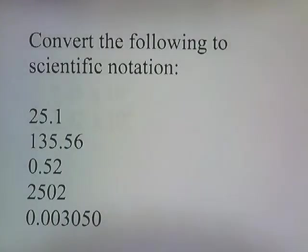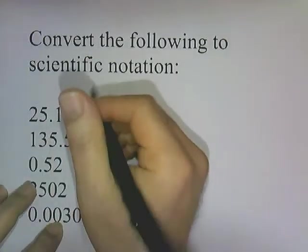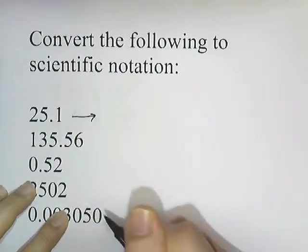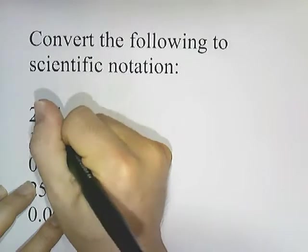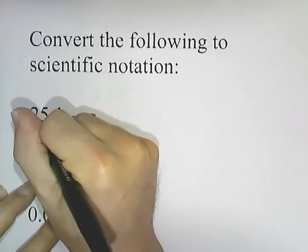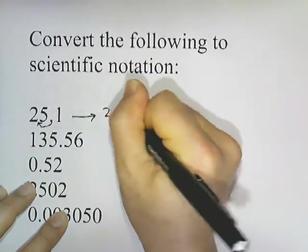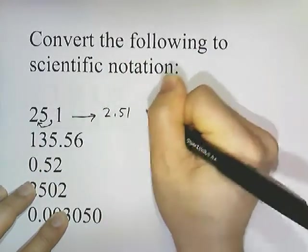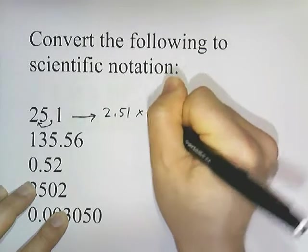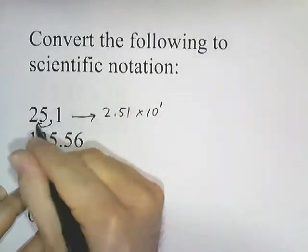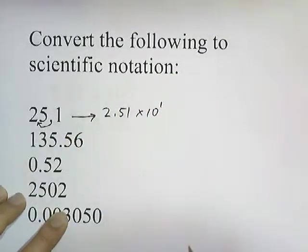Let's convert some numbers into scientific notation. 25.1 in scientific notation — I have to move this dot over one spot, so that's going to be 2.51 times 10 to the 1, since I moved the dot one place over.